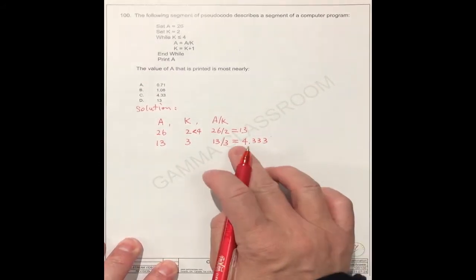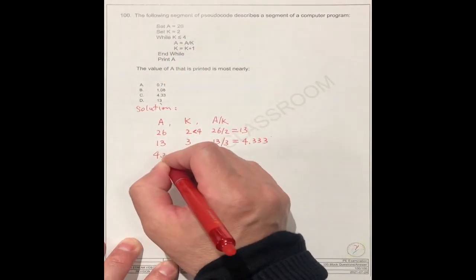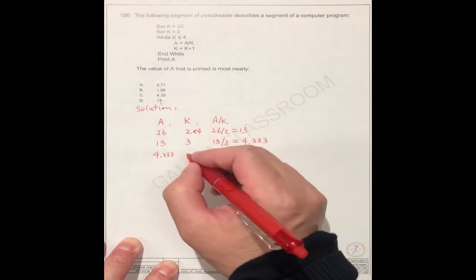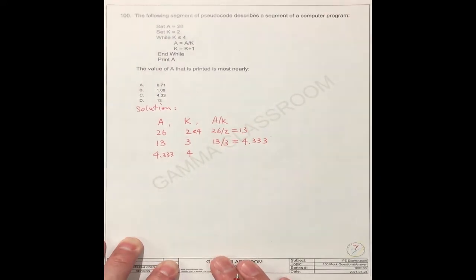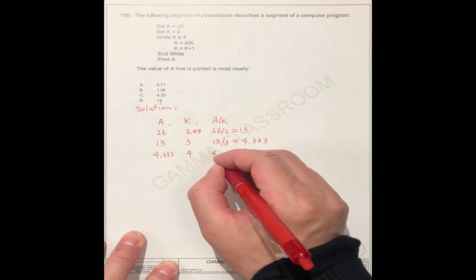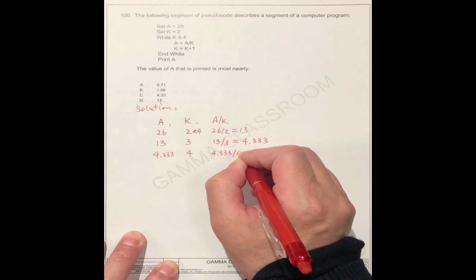So the next one, this is a, because this is a, it's 4.333. How about k, k is equal to 4. So this is 4.333 divided by 4.